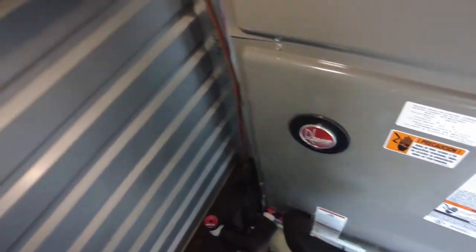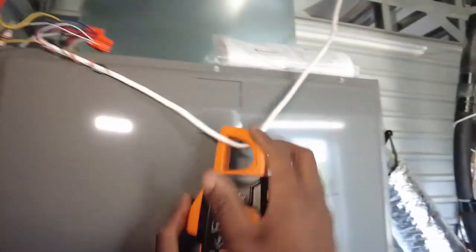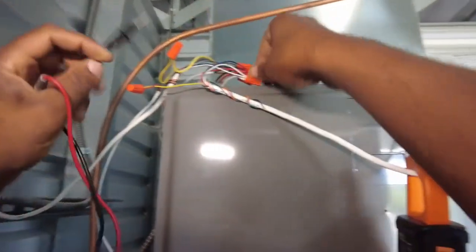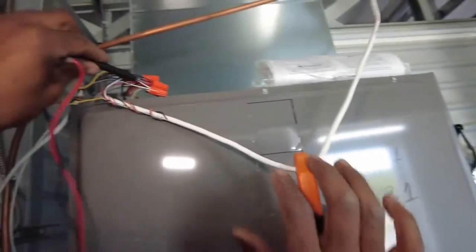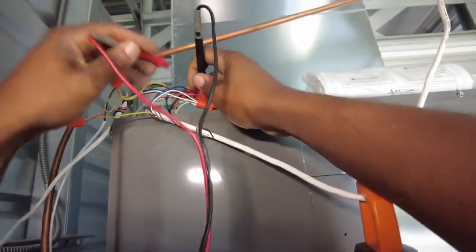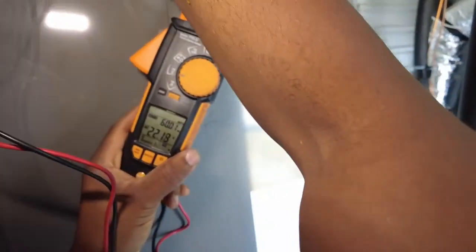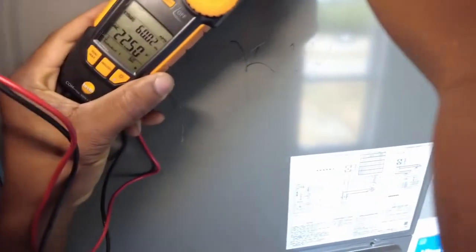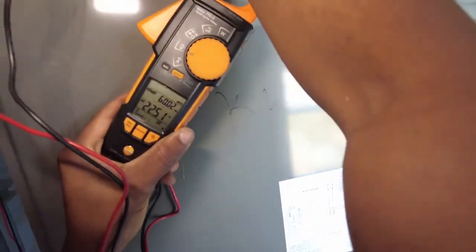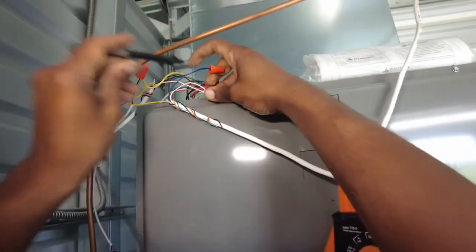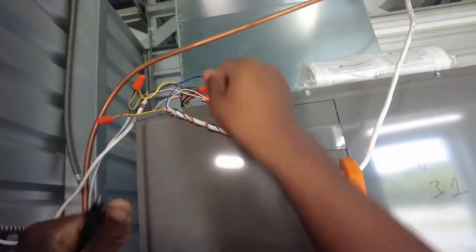Now the unit's kind of short cycling. So just about to check voltage here. See what I've got. Cross my 24 volts and common. As you see, I'm only reading 20, 22 volts, which is very low.